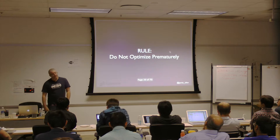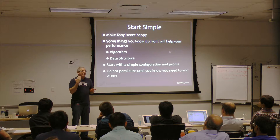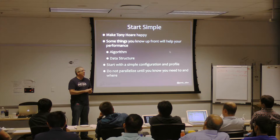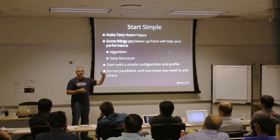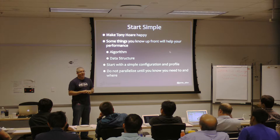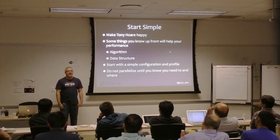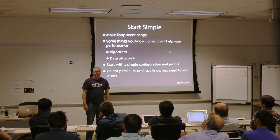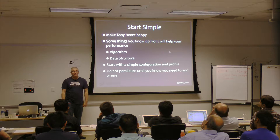Do not optimize prematurely. Think about the right algorithm and appropriate data structures, and consider performance testing from the outset so you know when you're going outside non-functional requirements. That said, don't perform additional optimizations like distributing work until you've measured that you need it. I always get this wrong — I can't predict where code will be hot, and sometimes I'm really surprised where the hot spots end up.